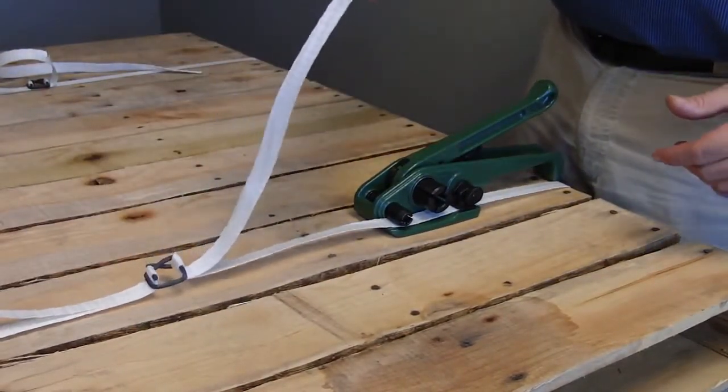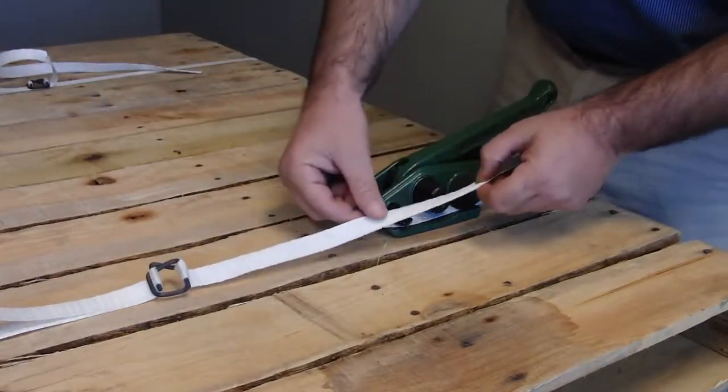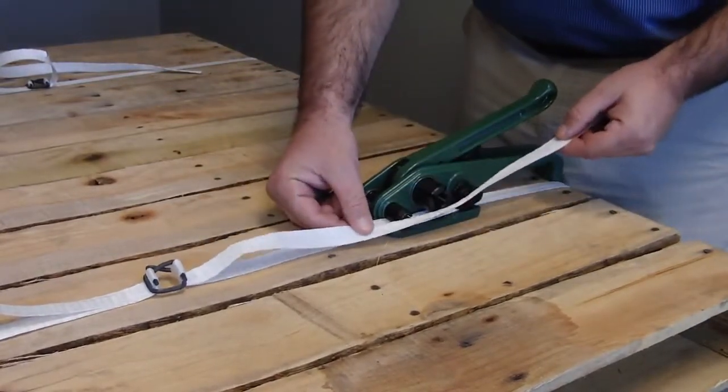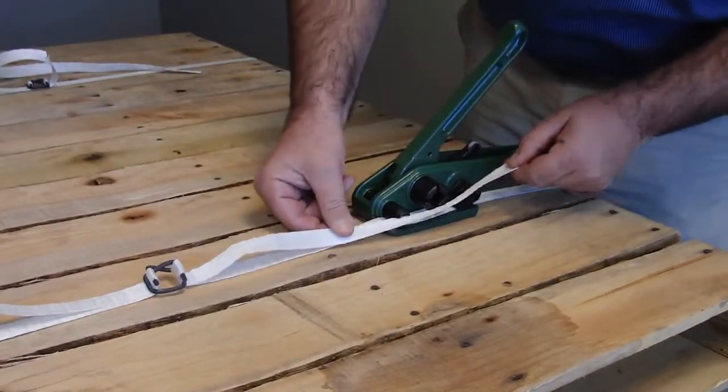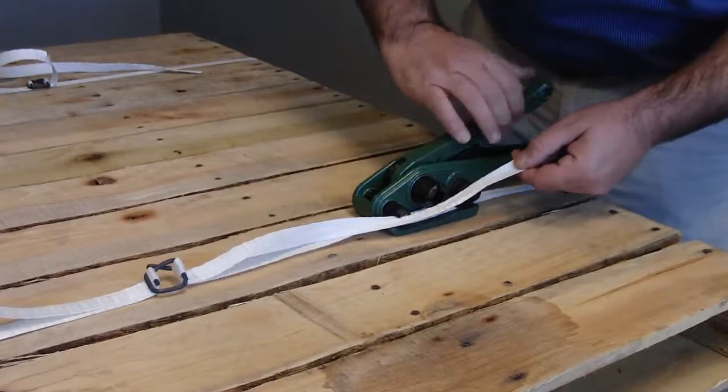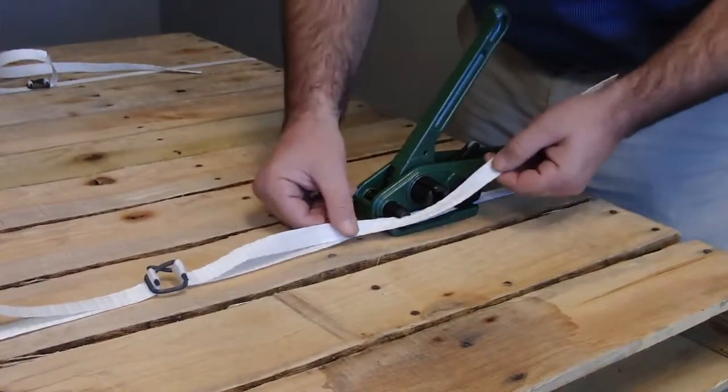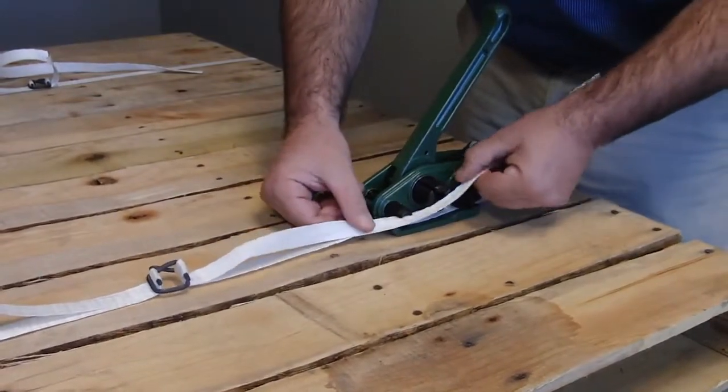You then take the top strap, insert it through the cutter, and then into the slots on what they call the drum.